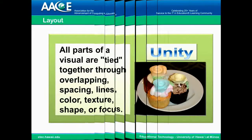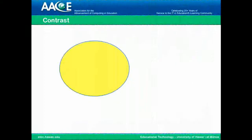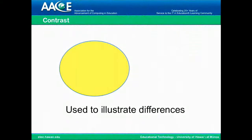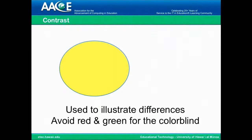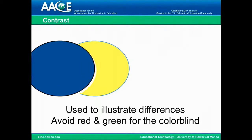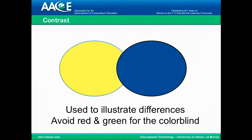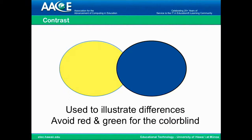Use contrast to illustrate differences, but be careful to avoid red and green because people that are colorblind see these as the same color. So, for example, here are two different circles, one in yellow and one in blue, and it's easy to see the contrast between the two.